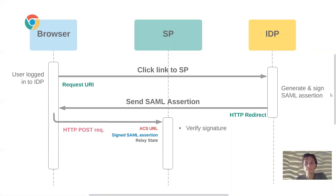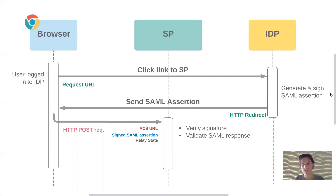The service provider will then verify the signature on the assertion to check that it's genuinely from the identity provider. It'll validate the SAML assertion, checking that all of the required attributes are set, that the structure is correct, and that the issuer is set to the entity ID of the identity provider and the audience is set to the entity ID of the service provider.